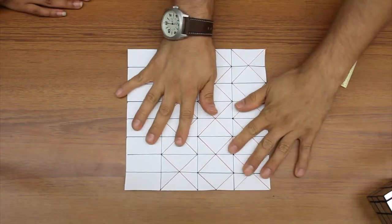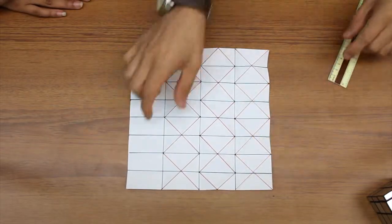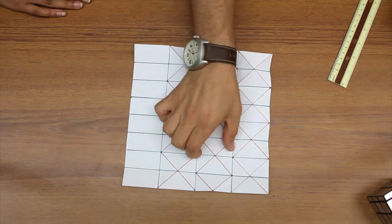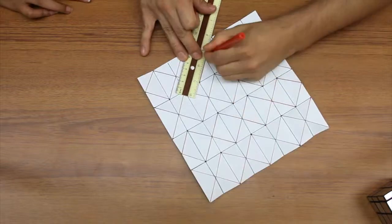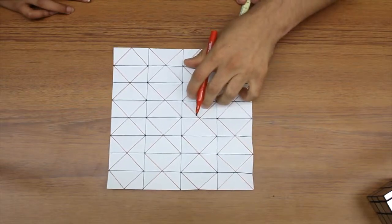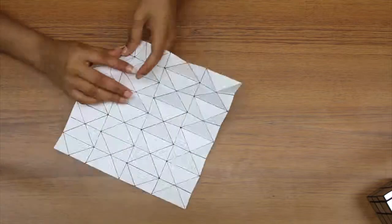All right, awesome. So as you guys can see, every single red line is folded backwards. Now I'm going to show you the pattern for the next part. The pattern for the third row actually replicates the pattern from the first row.